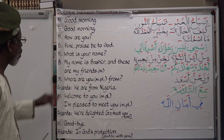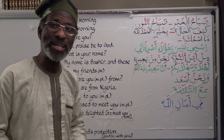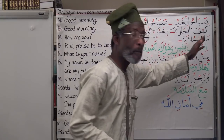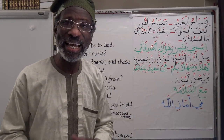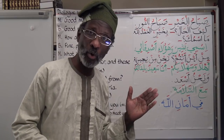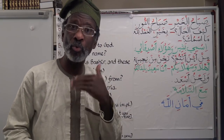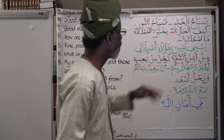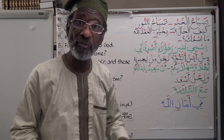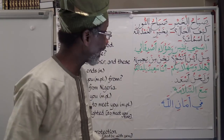What is your name? 'Ma ismuka.' Ma means what, ism means name. The 'ka' at the end is an attached pronoun referring to the person we are speaking to — a boy. If we are speaking to a girl, we say 'ma ismuki' — what's your name?